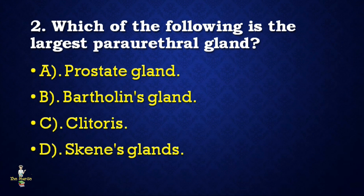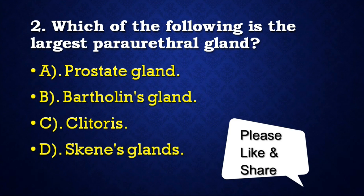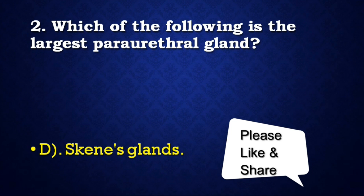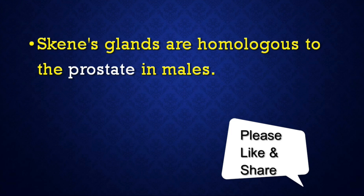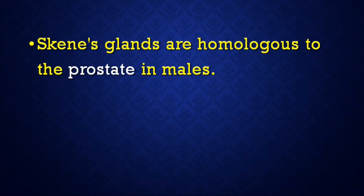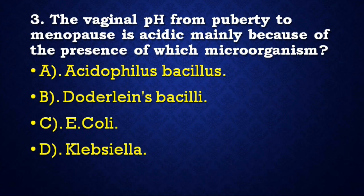Next question: Which of the following is the largest para-urethral gland — prostate gland, Bartholin's gland, clitoris, or Skene's gland? Correct answer is Skene's gland. Skene's glands are homologous to the prostate in males.